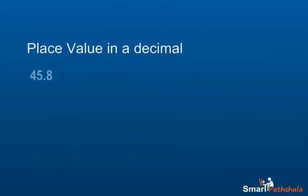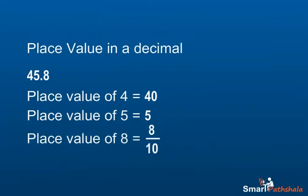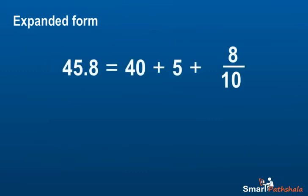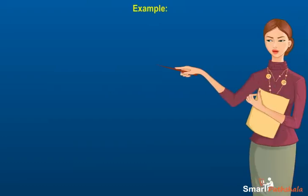Consider a number 45.8. In this, the digit 4 is at the tens place, 5 is at the units place, and 8 is at the tenths place. The decimal point is always placed between the units place and the tenths place. So 45.8 in expanded form can be expressed as 40 plus 5 plus 8 by 10. 45.8 is read as 45 and 8 tenths.